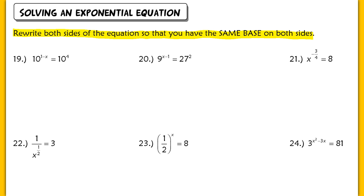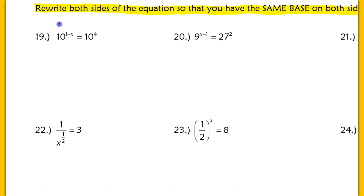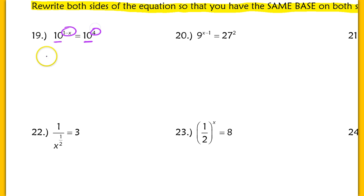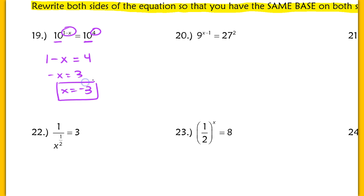Let's take a look at number 19. I have an exponential equation here because I have a variable in my exponent. Now the bases are already the same, so I don't have much work to do. If I know that these are supposed to be equal, then I know the exponents must also be equal. So 1 minus x has to equal 4. If I subtract 1, I end up with x equaling negative 3. That's a very basic problem.